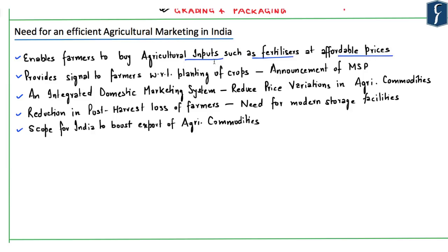An efficient marketing system provides signals to farmers for planning crop sowing. By using market signals, farmers can grow crops that are high in demand and thereby get remunerative prices. A well-connected and efficient market would also address food inflation by matching supply with demand. Additionally, MSP announcements by the government help farmers decide which crop to sow in a particular season.